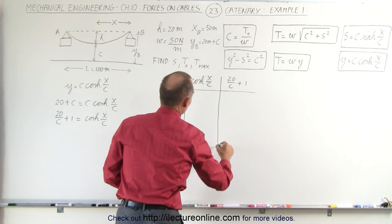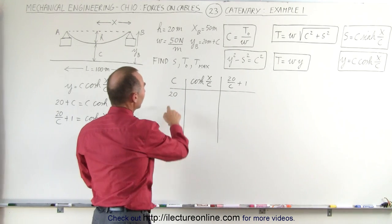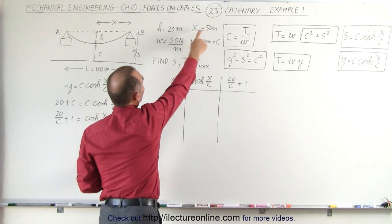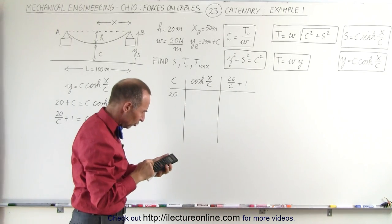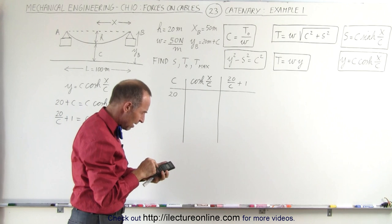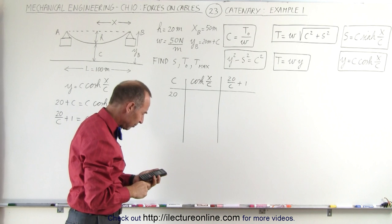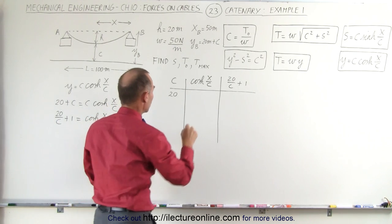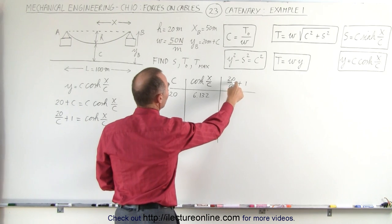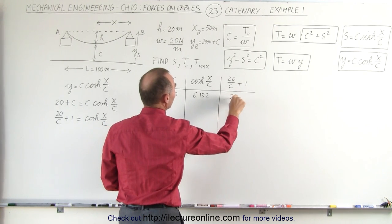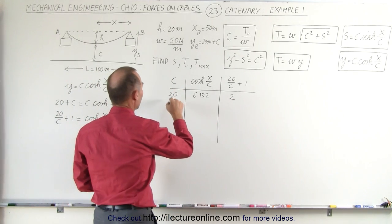It's going to take a few guesses. Let's start with C equal to 20. With C=20 and X=50, we take cosh(50/20) = cosh(2.5), which gives 6.132. And on the left side, 20/20 plus 1 equals 2. They are not equal to one another, so let's try a bigger value.